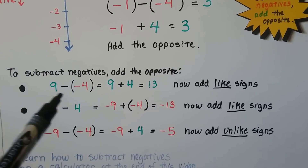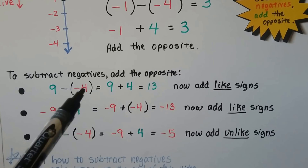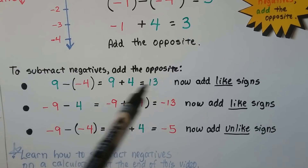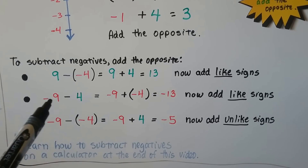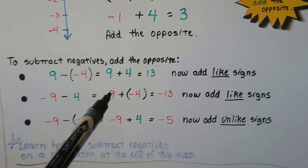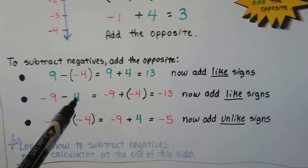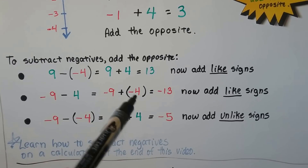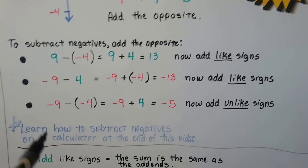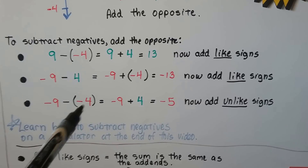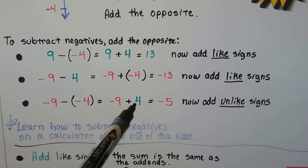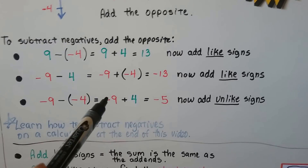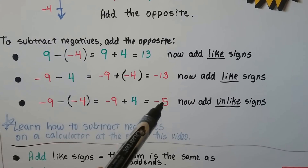Here are some more examples. We have 9 minus a negative 4 — we add the opposite, so that becomes 9 plus 4, which is 13. Both are positive so the answer is positive. With negative 9 minus 4, we keep the negative 9, change this to a plus sign, and make the 4 a negative 4. We're adding like signs: negative 9 plus negative 4 gives negative 13. With negative 9 minus a negative 4, that turns into negative 9 plus positive 4. The difference between 9 and 4 is 5, and negative 9 is farther from 0, so the answer is negative 5.